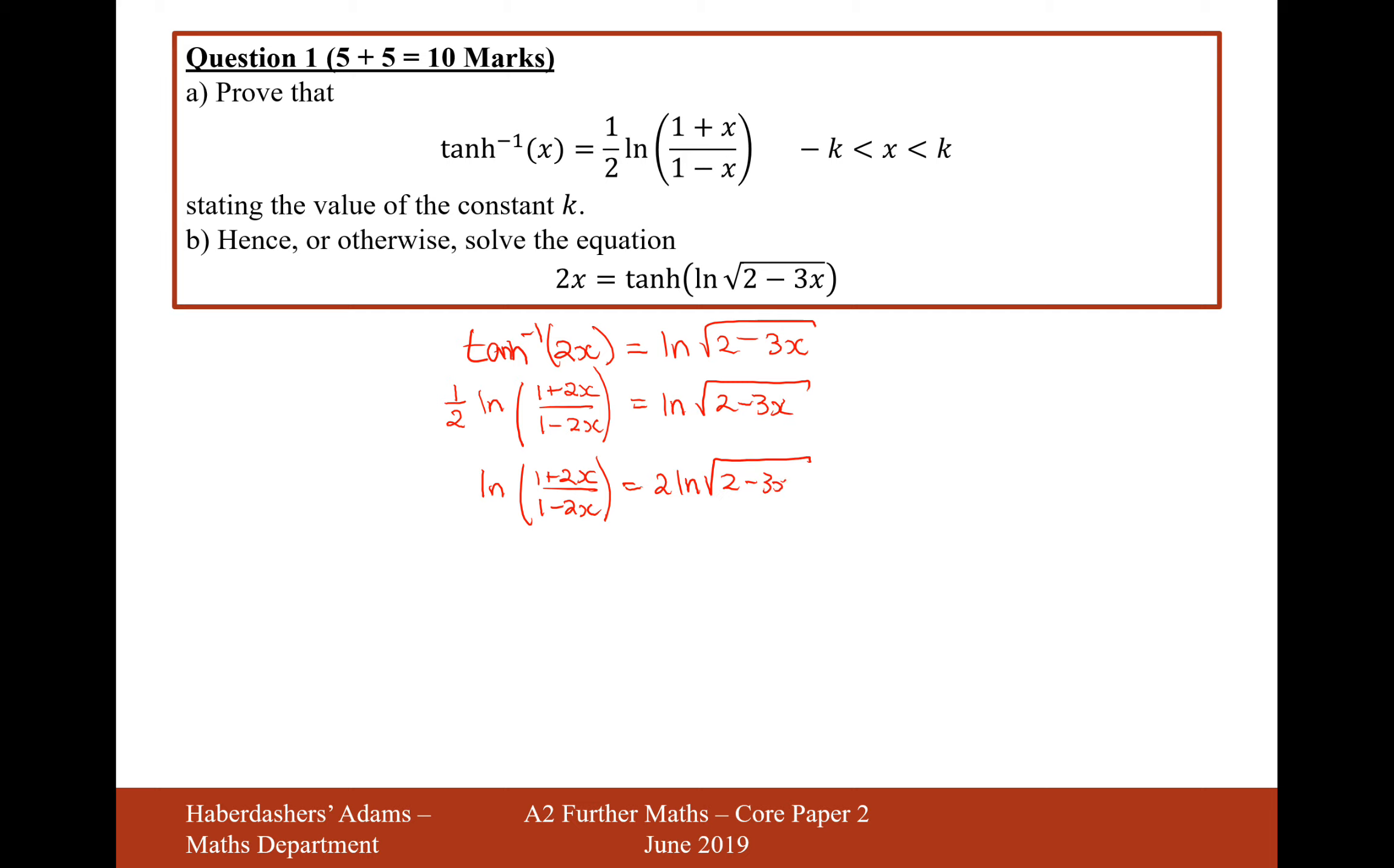So ln of 1 plus 2x over 1 minus 2x equals 2 ln root 2 minus 3x. And the effect that will have is it will now be able to be moved inside the logarithm as a power, so it will now be squared, which will cancel out this square root here. So then when we also simultaneously get rid of the ln's, we're going to get 1 plus 2x over 1 minus 2x equals 2 minus 3x.